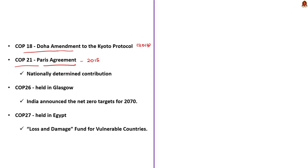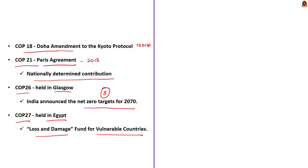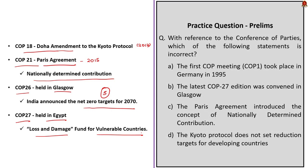At COP26 in Glasgow, India announced net zero targets for 2070 as part of Panchamrit. The most recent COP27 was held in Egypt, with a major outcome being the loss and damage fund for vulnerable countries. Option A — first COP meeting in Germany in 1995 — is correct. Option B — COP27 was convened in Glasgow — is wrong; COP27 was held in Egypt and COP26 was in Glasgow. Option C — Paris Agreement introduced the concept of Nationally Determined Contribution — is correct. Option D — Kyoto Protocol does not set reduction targets for developing countries — is also correct. So the incorrect statement is option B.